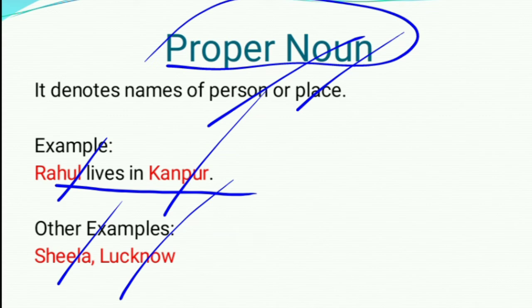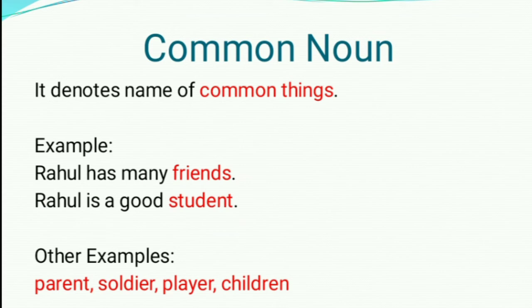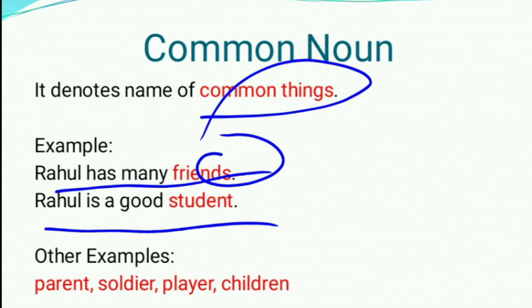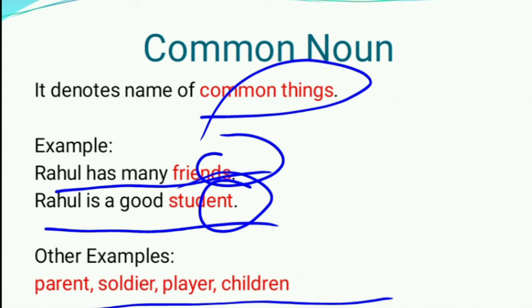Now, common noun. It denotes the name of common things. For example, Rahul has many friends — here the word in red color, friends, is a common noun. Another example: Rahul is a good student — here, student is a common noun. Other examples: parent, soldier, player and children — they all are examples of common noun.